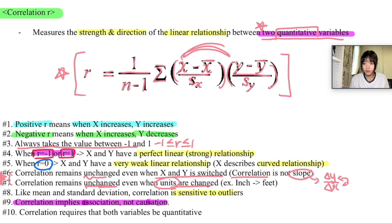And lastly, correlation requires that both variables be quantitative. I said it also over here, right? You must remember that correlation r is only used in situations where the question gives you two quantitative variables, not qualitative nor categorical variables. So this will be the end of the video.